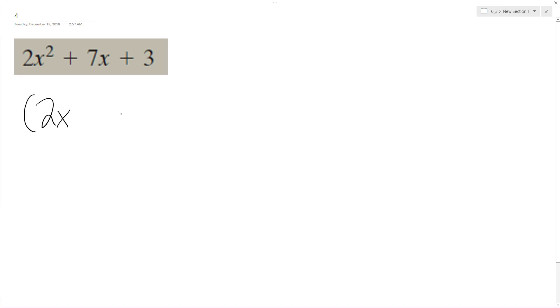So I know it has to be at least 2x times x something, and then to get 7, I need to multiply 2 by 3, and then I'll probably have 1 here. So let's check and make sure this works.